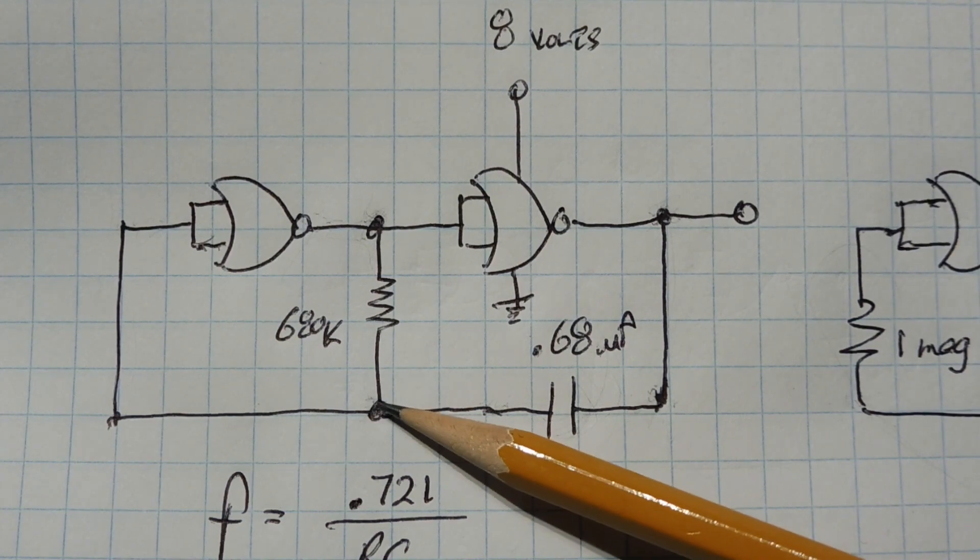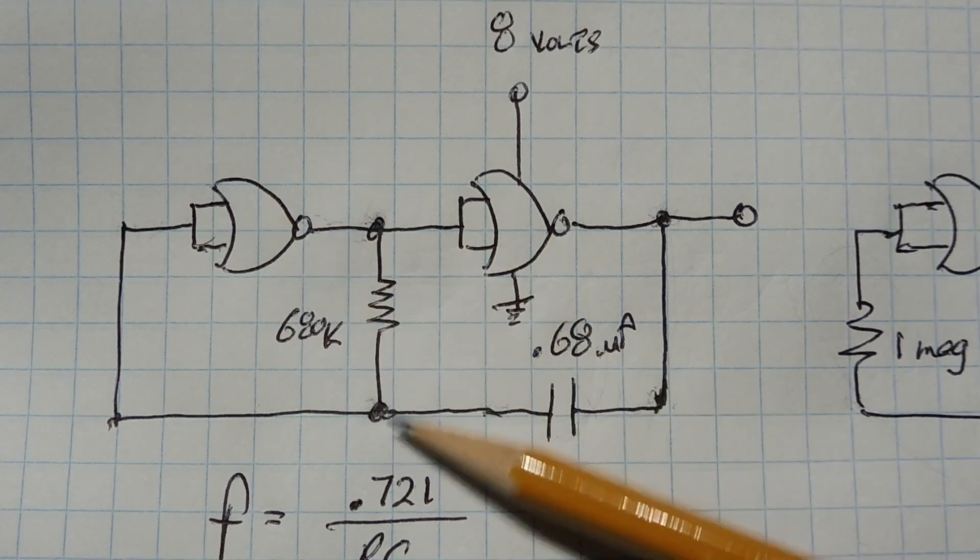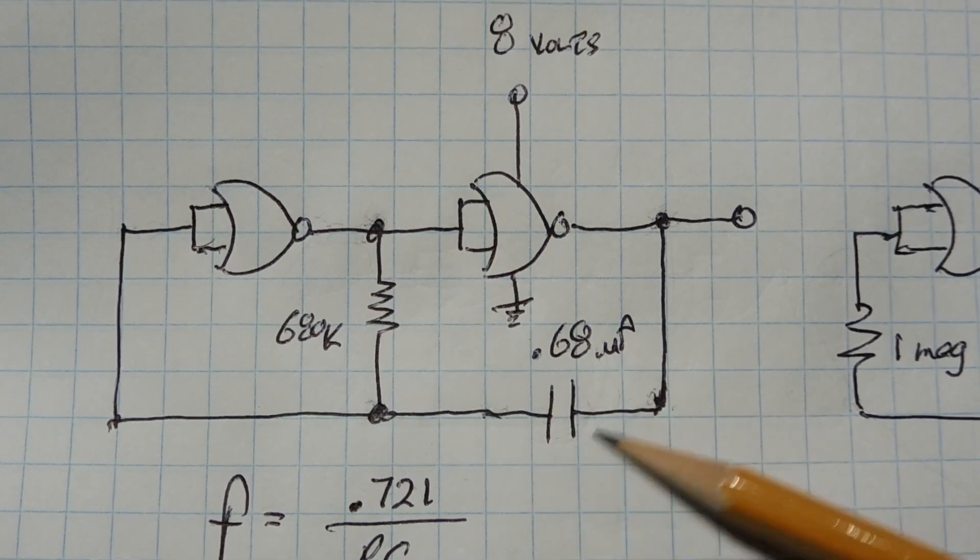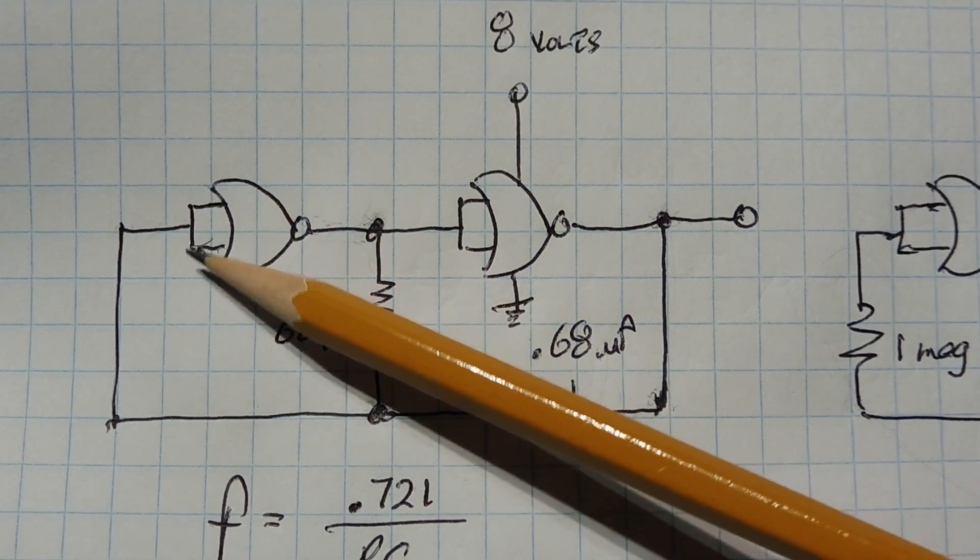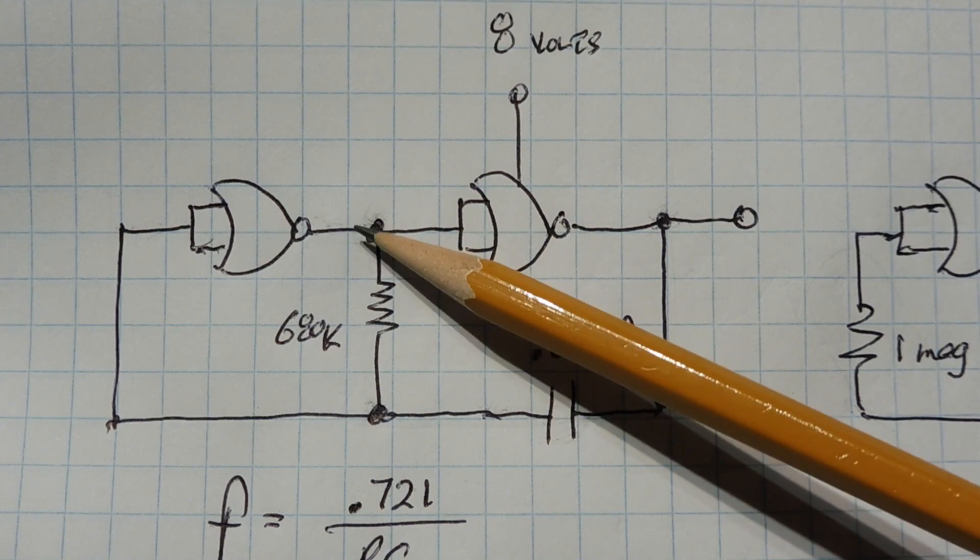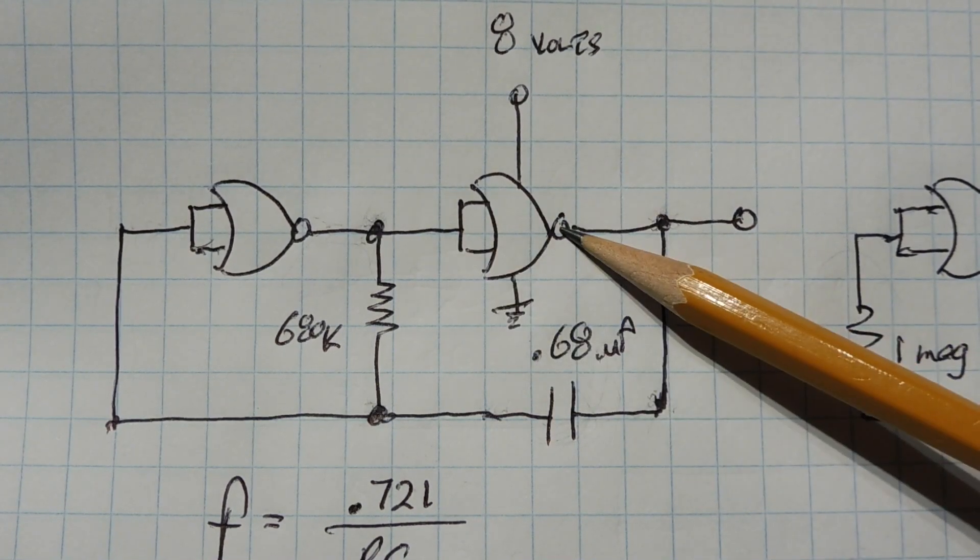That's the threshold of this gate. So when we have four volts across this capacitor, four volts will be fed into the input of this gate. This gate is going to change, so we're going to have a low here now and have a high here.